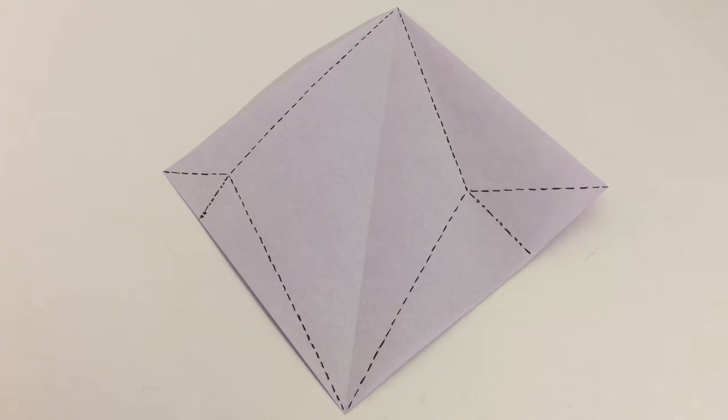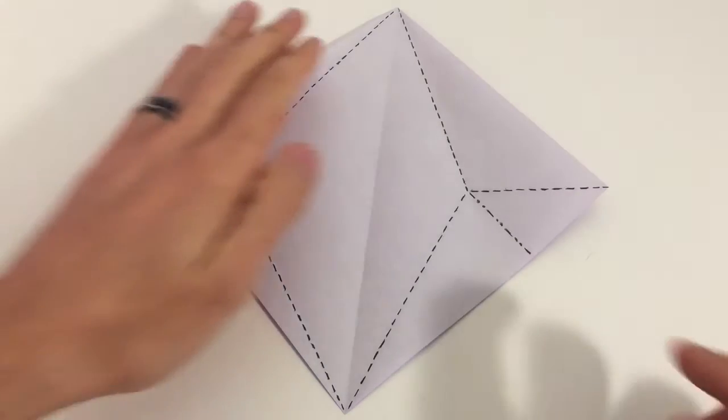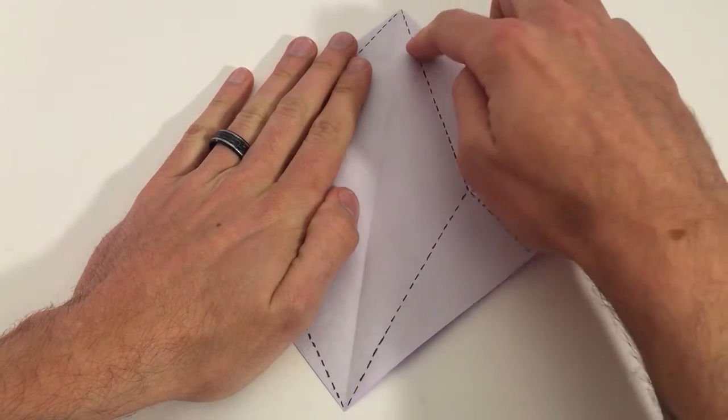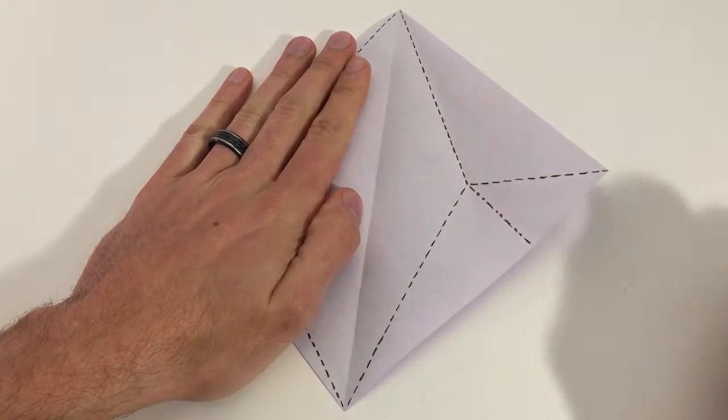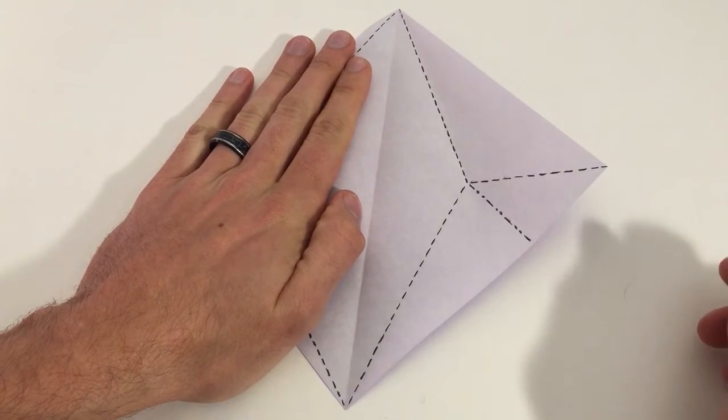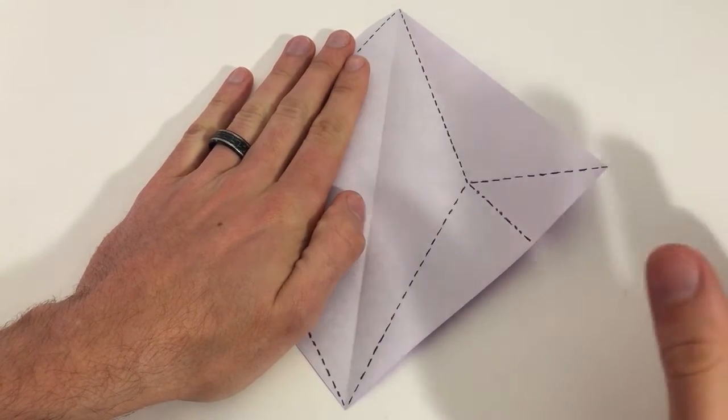Okay, we're going to look at rabbit ear folds and we'll start with the one on the right here. Now this has valley folds along each of the angle bisectors of this triangle. That's the most common way you'll see it. It's also the easiest way, and if you come across one of these...